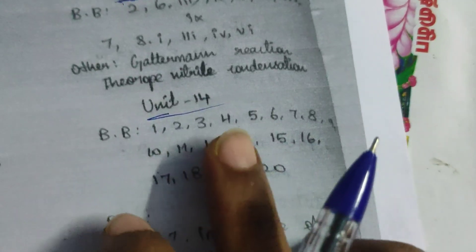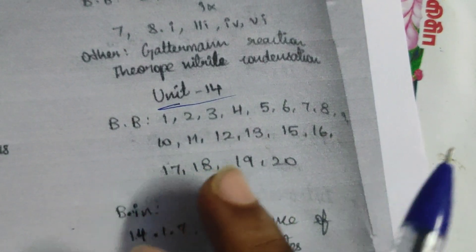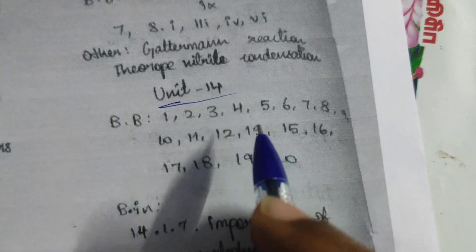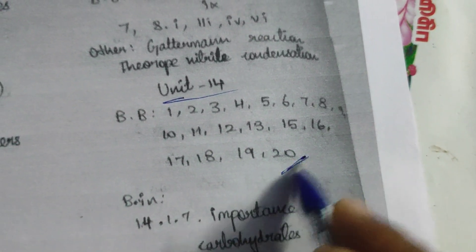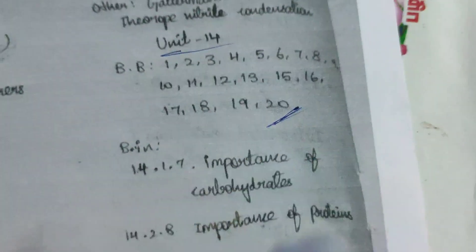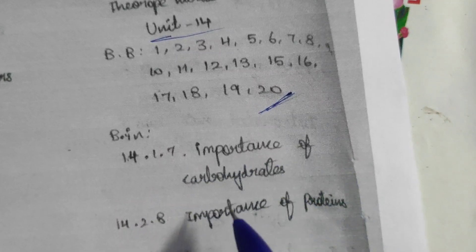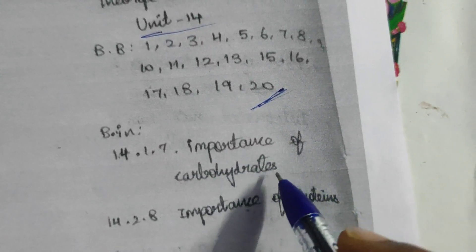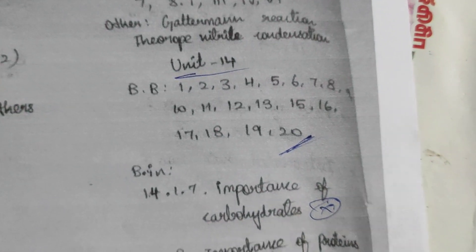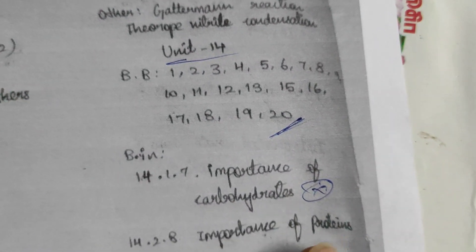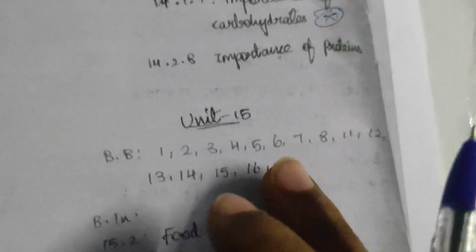Look at the book back: 1, 2, 3, 4, 5, 6, 7, 8, 9, 10, 11, 12, 13, 15, 16, 17, 18, 19, 20. It is Unit 14. There is no number, so you can check it. Now we look at the chart for 14.1.7 — the importance of carbohydrates. Really important is 4.3.4. The importance of protein is 14.2.8.